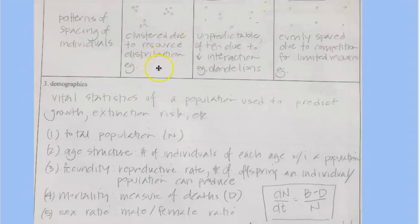usually is due to resource distribution. So for example, in a desert, you would see clumped organisms around a water source, for example.